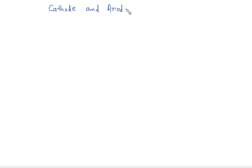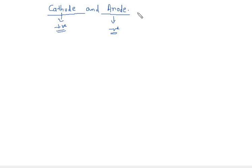Hello friends, today we're going to talk about cathode and anode. Many students have a big misconception about cathode and anode, so today I'm going to clear the misconception. Most students think that cathode is the electrode which has a positive charge and anode is the electrode which has a negative charge. It depends on the type of cell, some students say.